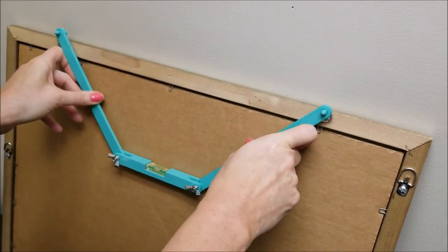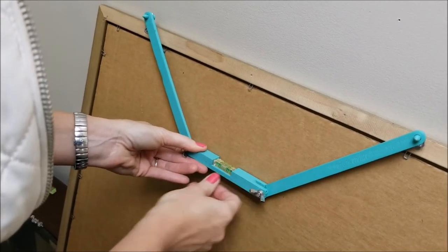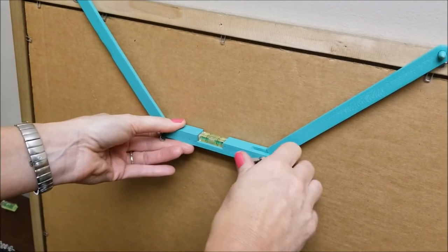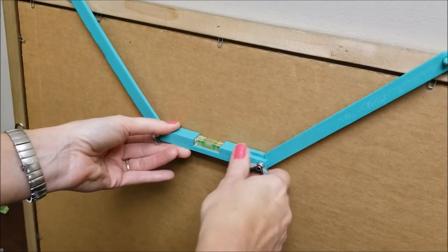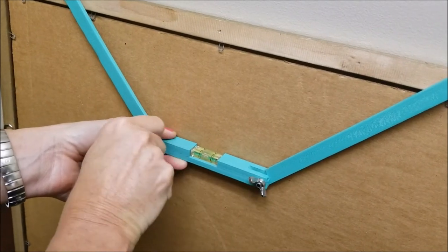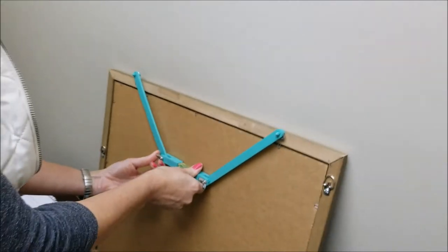Then make sure that everything is level by looking at it here at the bottom where you see the bubble in the level. Make sure that you're looking at it straightforward, head on, so that you know that it's level. Then just tighten the wing nuts right here. That's all you have to do.